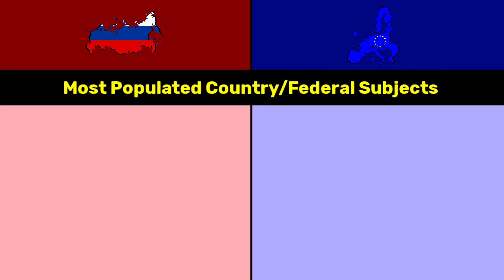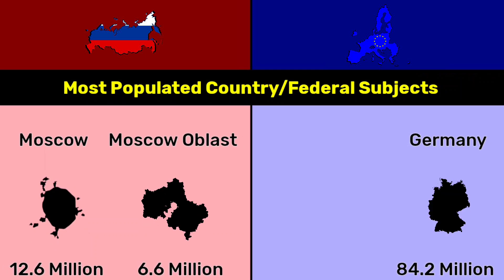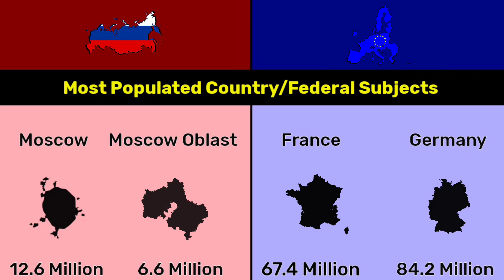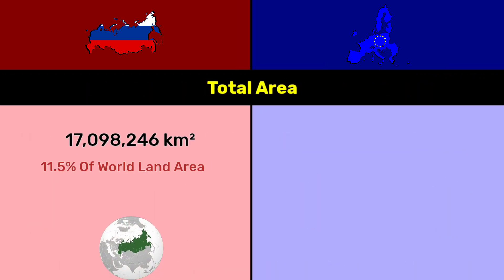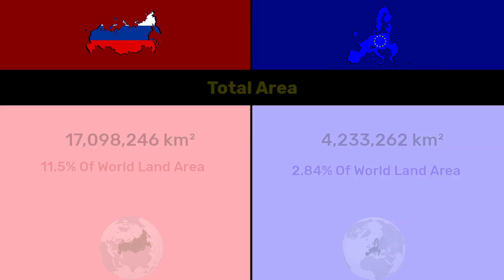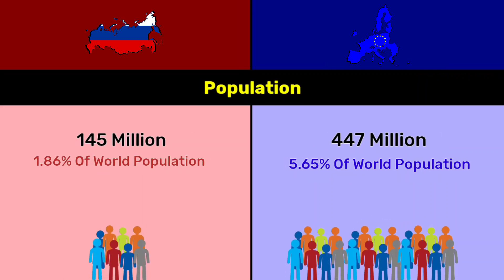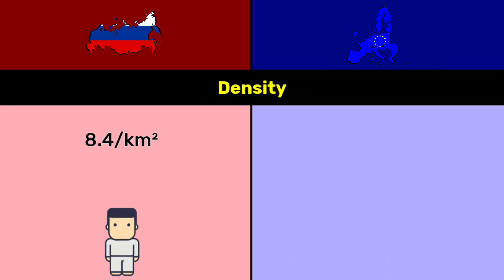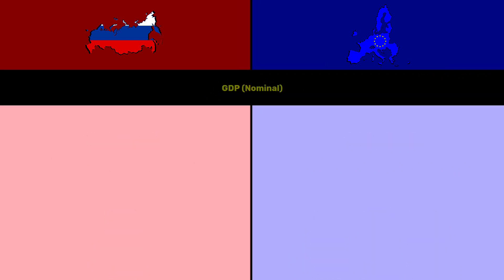Most populated divisions: Moscow at 12.6 million versus Germany at 84.2 million. Moscow Oblast at 6.6 million versus France at 67.4 million. Total area: Russia 17.09 million square kilometers, EU 4.23 million square kilometers. Population: Russia 145 million, EU 447 million. Density: Russia 8.4 per square kilometer, EU 26 per square kilometer.